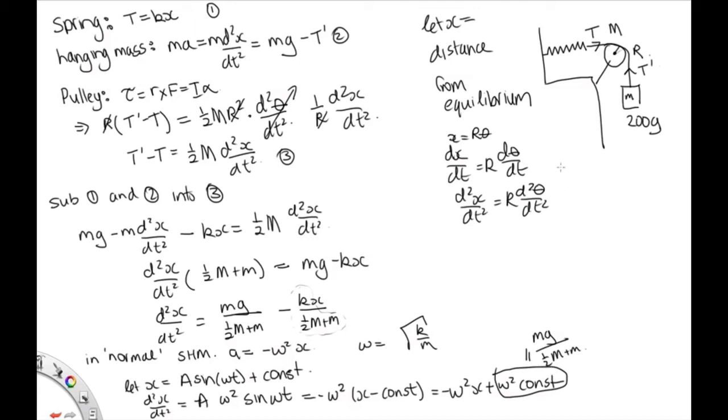So that tells us that in this case, let's try and get some more room here, we've got omega is equal to the square root of k over a half capital M plus little m. So that's what we were asked to find. We were asked to find omega.